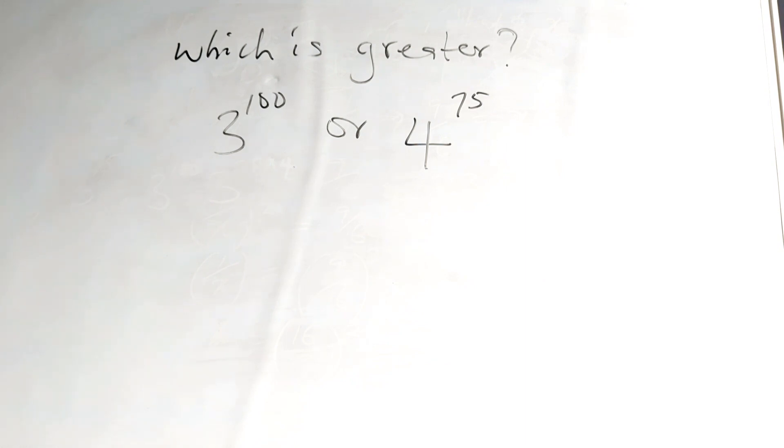Now, looking at the numbers, it's difficult to tell which is greater by merely looking at them because we are multiplying large numbers. We are multiplying 3 into 100 places and 4 into 75 places.